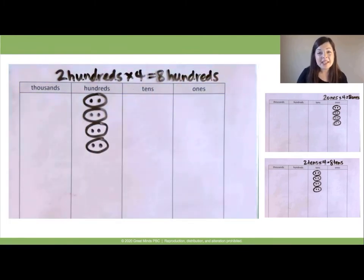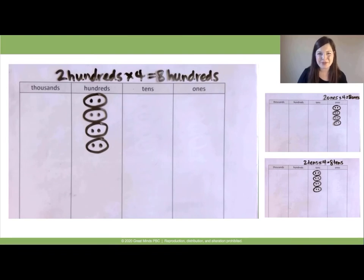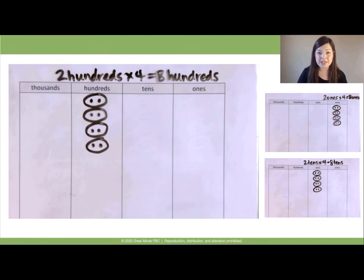Now let's think a little bit about what we just did. What do you notice about multiplying 2 hundreds times 4, as compared to multiplying 2 tens times 4, or 2 ones times 4? Pause the video to talk out loud about what you notice. You may have noticed that there are the same number of place value discs each time we multiplied — there were 4 groups of 2 units — but the value of the place value discs were different, and so the products were different.